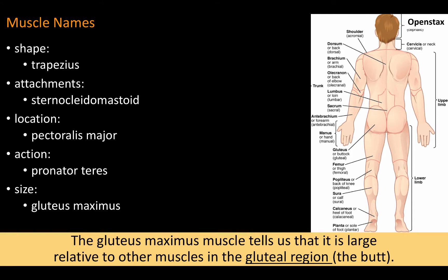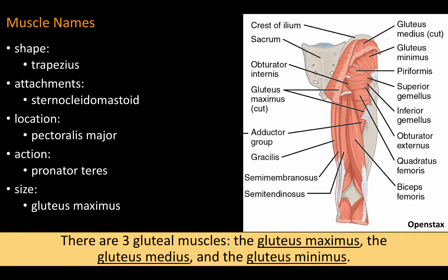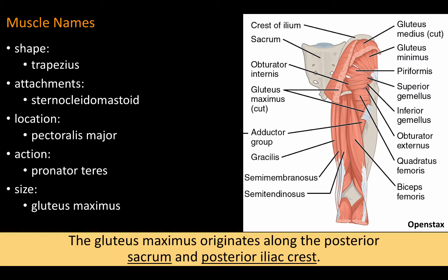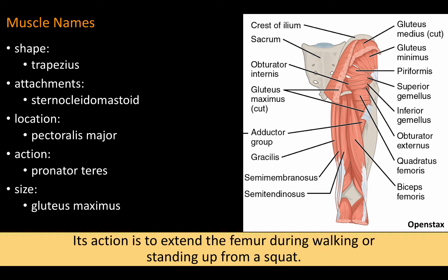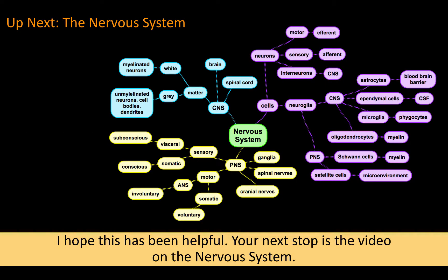The gluteus maximus muscle tells us that it is large relative to other muscles in the gluteal region — the butt. There are three gluteal muscles: the gluteus maximus, the gluteus medius, and the gluteus minimus. The gluteus maximus originates along the posterior sacrum and posterior iliac crest. It inserts on the gluteal tuberosity of the femur. Its action is to extend the femur during walking or standing up from a squat. I hope this has been helpful.